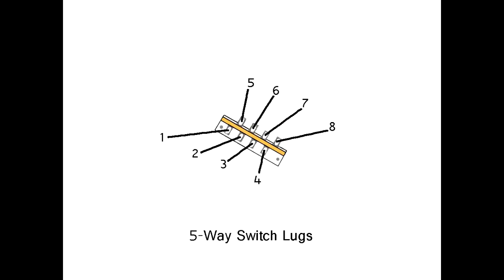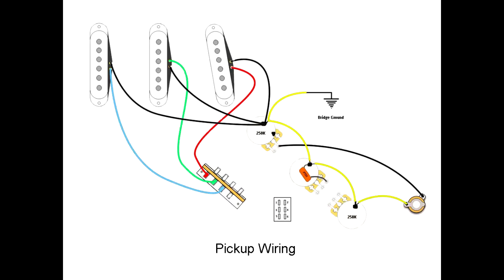For the purpose of this particular video, I'm referring to the left side of the switch here as lugs 1, 2, 3, and 4. The right side is 5, 6, 7, 8. So right now, the bridge pickup is connected to lug 1, middle to lug 2, and the neck is connected to lug 3.